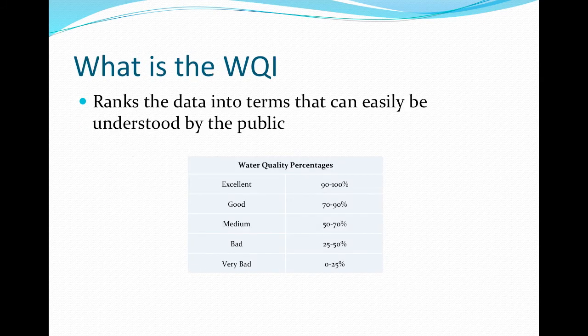The Water Quality Index, or WQI, incorporates chemical, physical, and biological characteristics of water. It is used to assess the quality of water in terms of health of the ecosystem, safety for human contact, and quality of drinking water. WQI weighs the various measured parameters and assigns a score to the waterway that is easily understood by everyone, regardless of background.